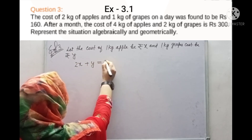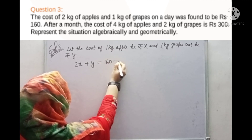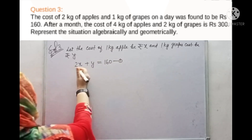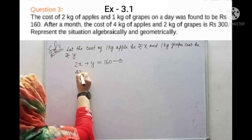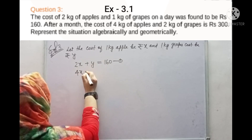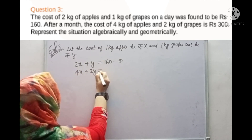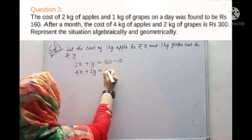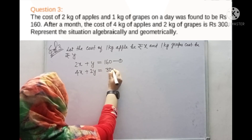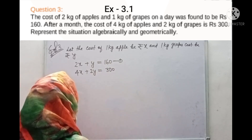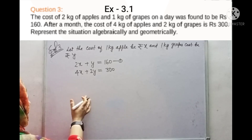2 kg apples and 1 kg grapes cost 160, so our first equation is: 2x + y = 160. And 4 kg apples and 2 kg grapes cost 300, giving us: 4x + 2y = 300. But notice — this is not a new independent equation.